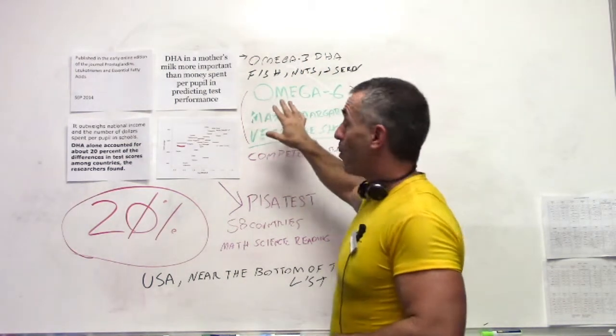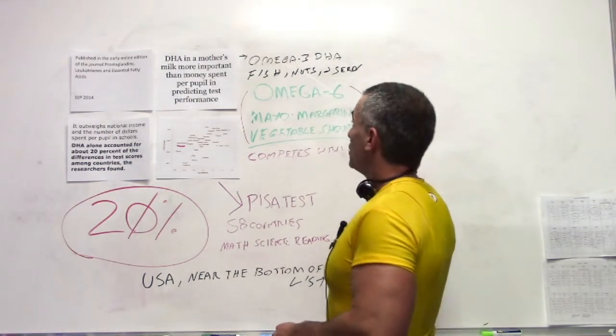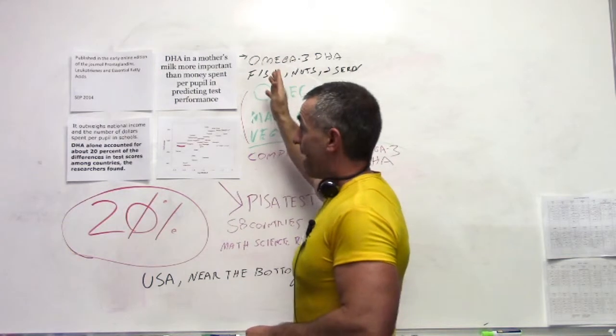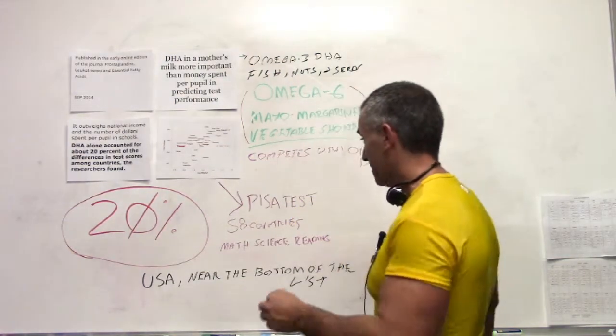Mayo, one of the worst sources of omega-6s, bad ones I should say, definitely played an impact on dumbing down the children of the country, especially the ones which are breastfed.